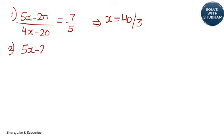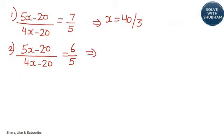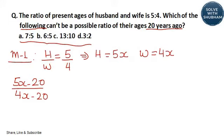The second option says (5x − 20) / (4x − 20) = 6/5. When you try solving it, you get x = −20. This is not possible because the moment x takes a negative value, the ages of husband and wife will be negative, which is not possible. Therefore, 6 by 5 is not possible, and we go with option number B. Let us look at the second method.